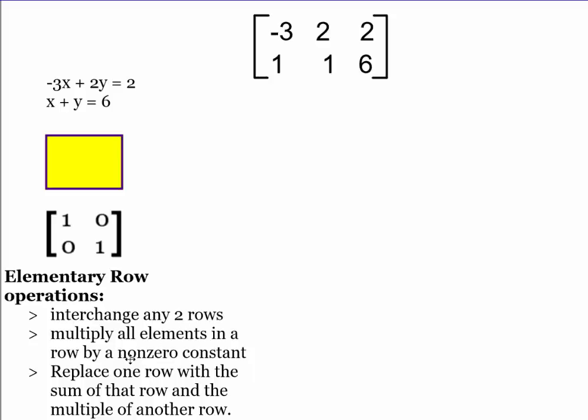The other thing that we can do is we actually have to do both of these at the same time. Multiply all the elements in the row by a non-zero constant, and then replace the row with the sum of that row and the multiply of the other row. So we'll see how that works in just a second. We're going to add it to the other line. That's harder to explain than it is just to do.